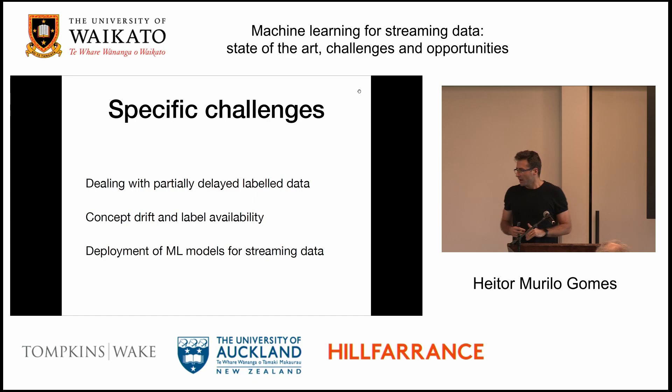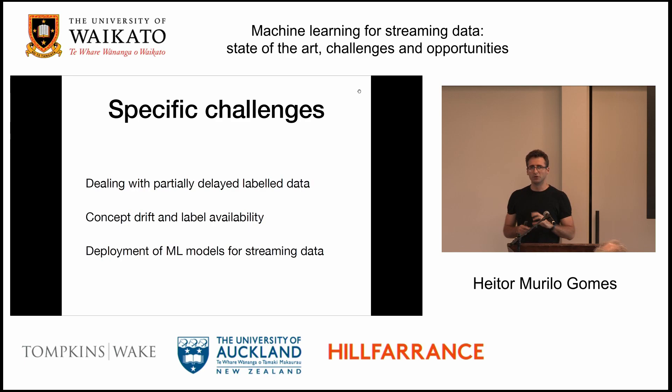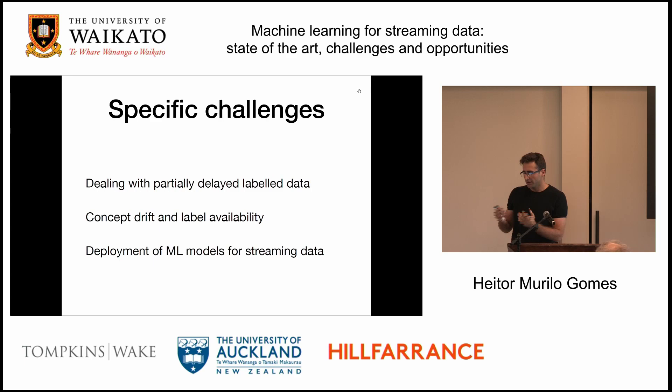When we have this non-negligible delay between receiving the label and actually using it, then we need to do something else — we need to take this into account. Also, concept drift and label availability: you might not have all the labels to do this prediction. So if you don't have the immediate labeling setting, then doing concept drift detection is much harder. And finally, the deployment of the models is much more difficult — you need to convince a lot of engineers to put together something running in production, and they don't really like to do it.